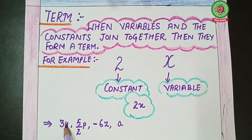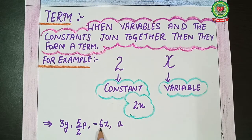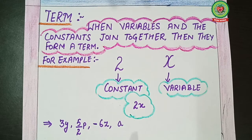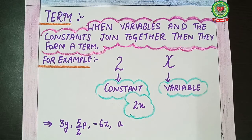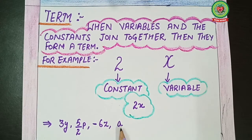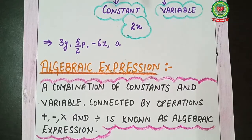Examples of terms: 3y (3 is a constant, y is a variable); 5/2 p (5/2 is a constant, p is a variable); −6z (−6 is a constant, z is a variable); and a — when no number is written with a variable, the constant is always 1. So 1 is the constant and a is the variable. All these are examples of terms.